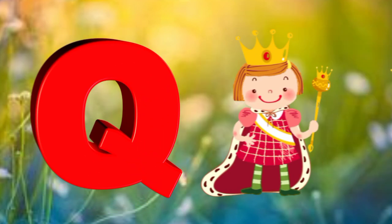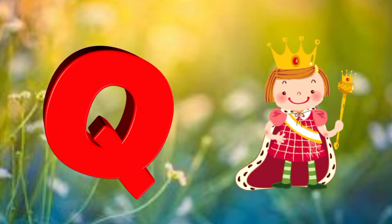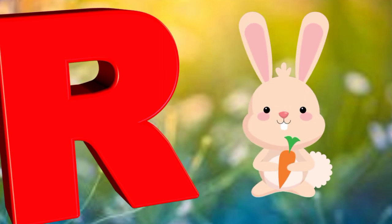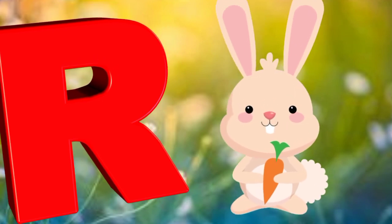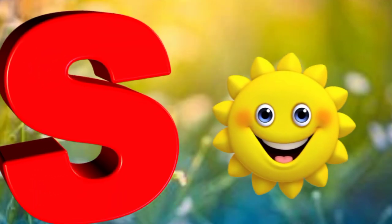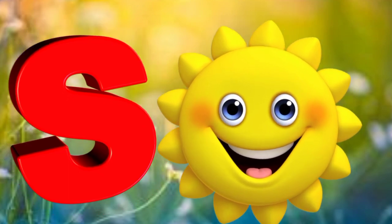Q is for queen, k-k-queen. R is for rabbit, r-r-rabbit. S is for sun, s-s-sun.